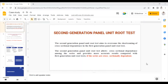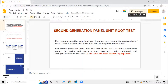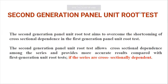Now suppose you are dealing with a panel data set. Let's take an example — suppose you are dealing with a group of countries, let's say European Union countries or ASEAN countries. It might be possible that these countries are either politically, culturally, or economically related with each other, so they might have high cross-sectional dependence among them.